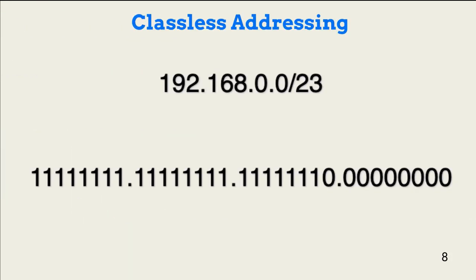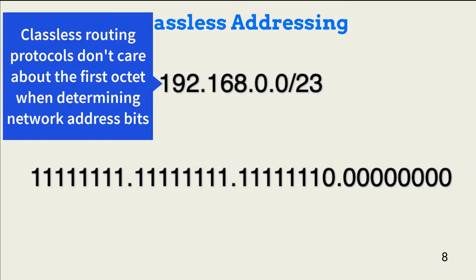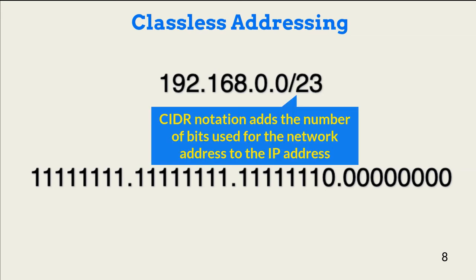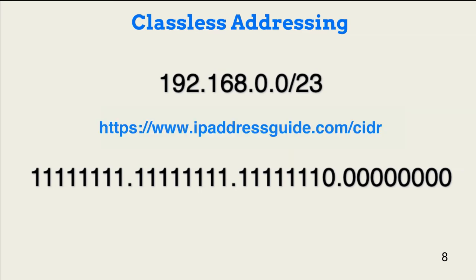In this example, IT determined it needed more than 256 hosts in a network, but team members still wanted to use the private address space 192.168. Because they were using classless routing protocols, they knew that, unlike classful routing, the subnet mask is sent along with the network addresses during topology convergence. So they were able to move the least significant bit in the third octet to the host address space to create a variable length subnet mask, or VLSM, using CIDR notation. CIDR notation places a slash after the address followed by the number of bits in the network address space. They can now place up to 512 hosts on a network segment. You can determine classless masking requirements by using the CIDR to IPv4 conversion tool at the address shown.